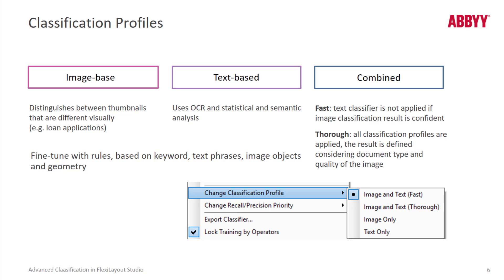ABBYY's classification models can be trained using different profiles. A profile defines how text and images from the document set will be used for training depending on the scenario. We have image-based, text-based, and combined classification profiles.